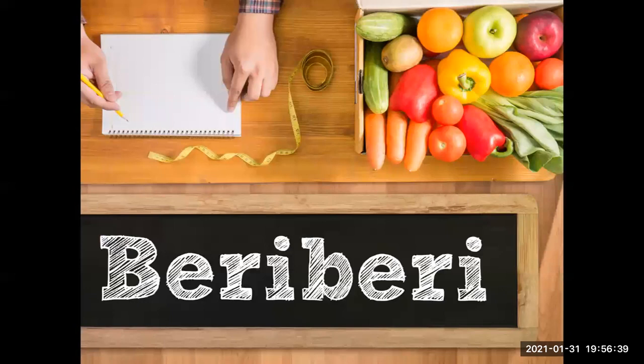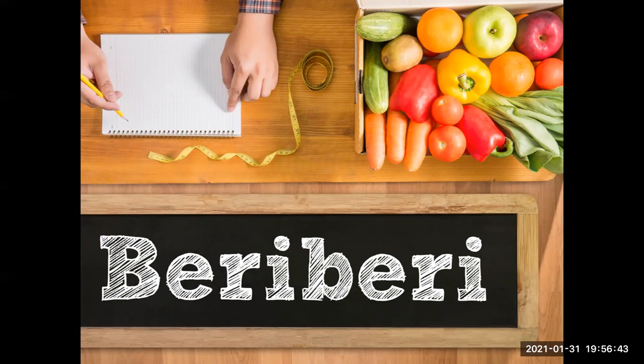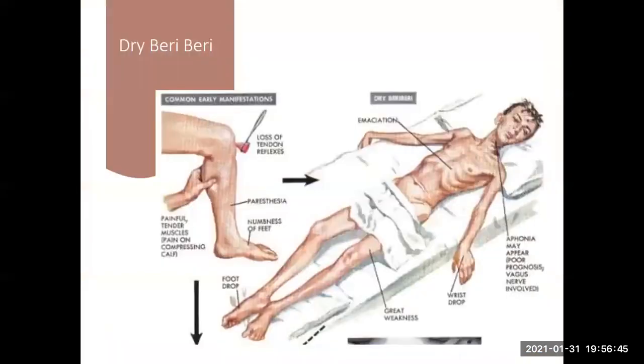So what is beriberi? Beriberi is the syndrome of thiamine B1 deficiency. It can be divided into either dry beriberi or wet beriberi. Dry beriberi affects mainly the nerves. As you can see here, the nerves are affected in this patient and lead to peripheral neuropathy, symmetrical peripheral neuropathy.